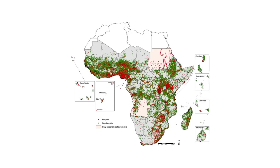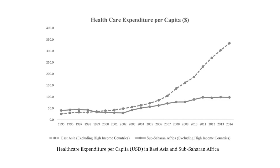They're going to build hospitals, which are very expensive, in places where they're going to reach and help a bunch of people — people who are sick, have genetic diseases, or are giving birth. The next piece of data we have is a graph. It's a simple graph that shows healthcare expenditures per capita, comparing East Asia and Sub-Saharan Africa. We can see right away that East Asia has higher healthcare expenditures than Sub-Saharan Africa.